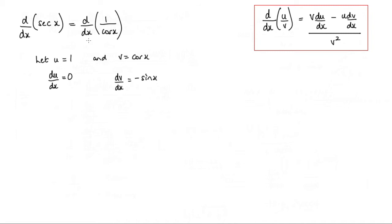Okay so now we can apply this quotient rule here. So what we've got is v du dx. So cos x times 0 which would be 0. Minus u dv dx. So u times minus sin x or negative sin x. So we'd have a positive sin x here. And that's all over v squared which would be cos squared x.